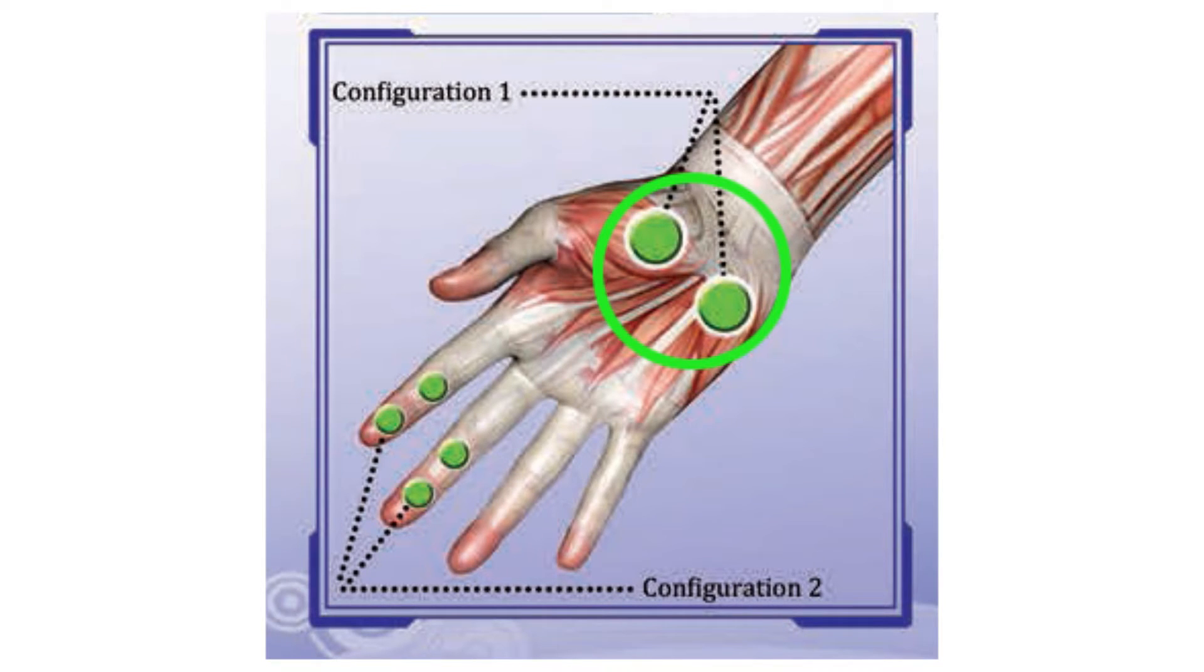We're going to use two GSC electrodes and place them on the subject's palms, specifically on the thenar and hypothenar eminence, to record fluctuations in skin conductance.